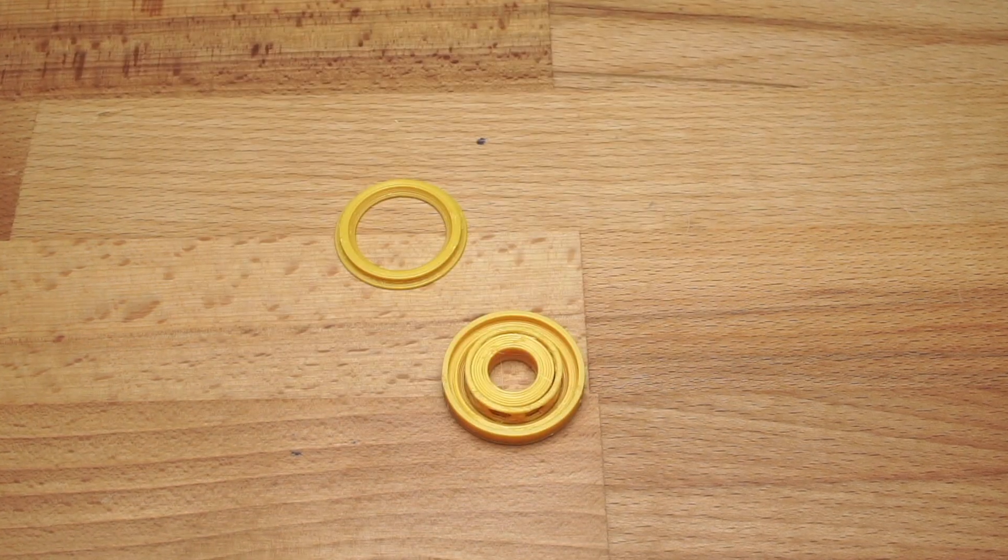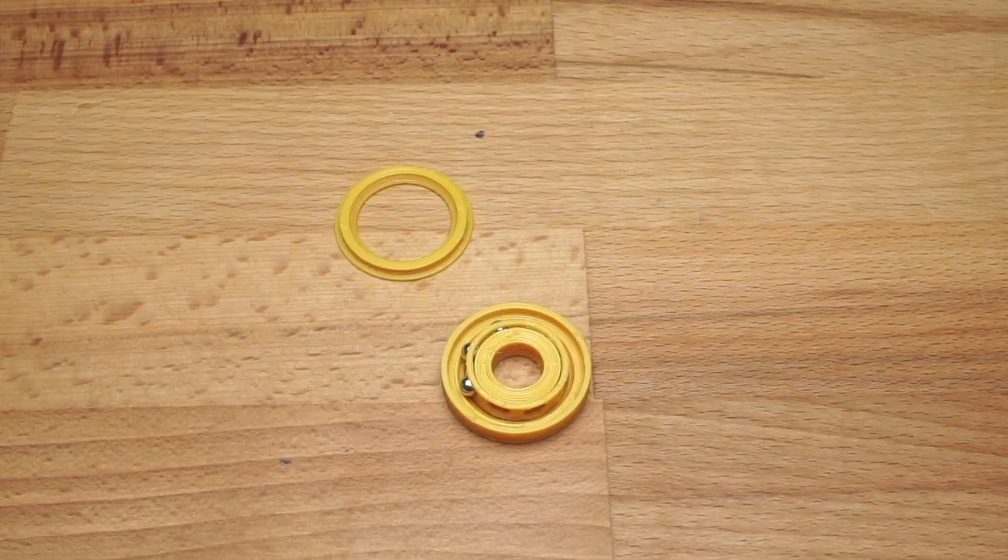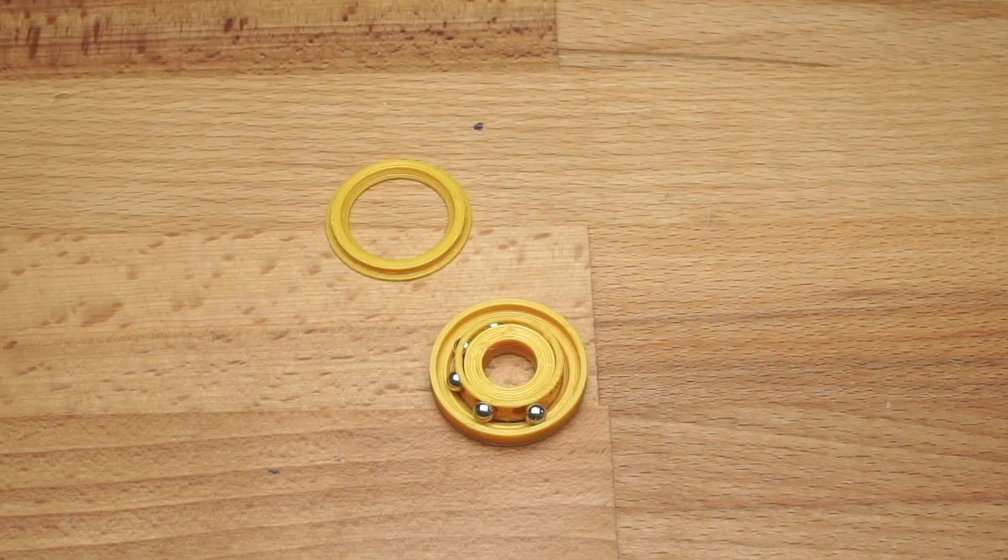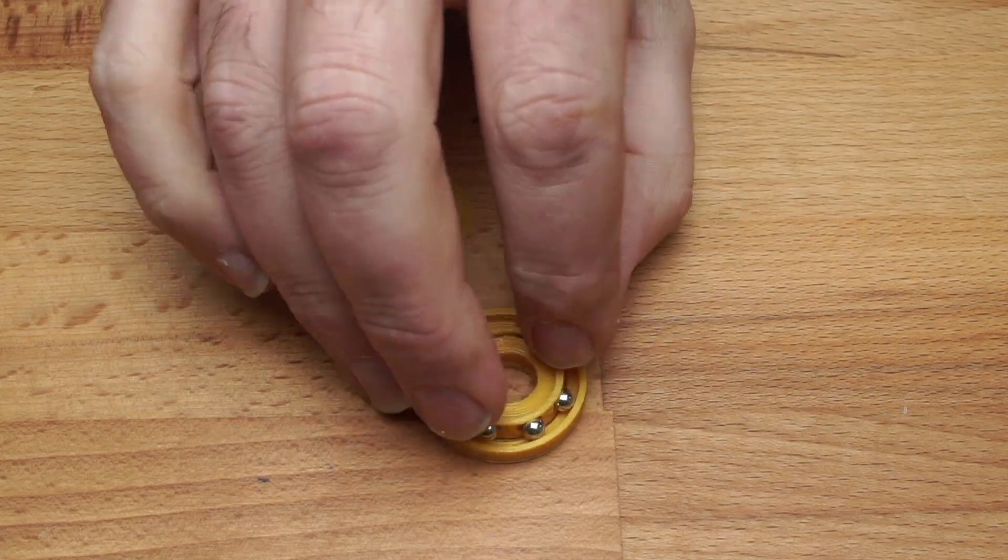This time I can't just pop the BBs in through a hole in the top because of the cage, so I've split the outer piece into two. I'll glue these together before testing.